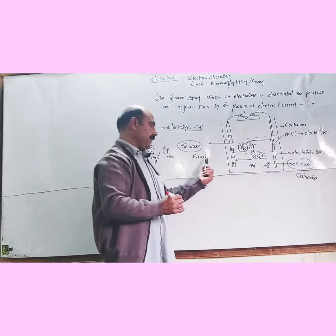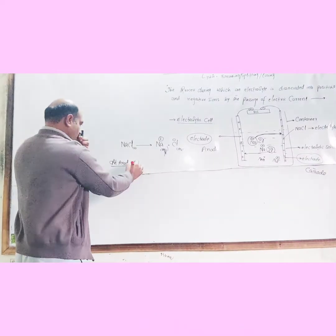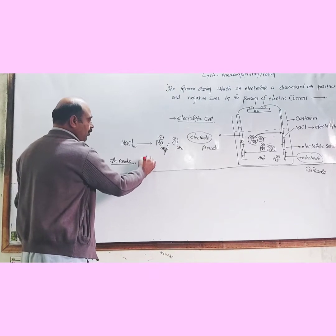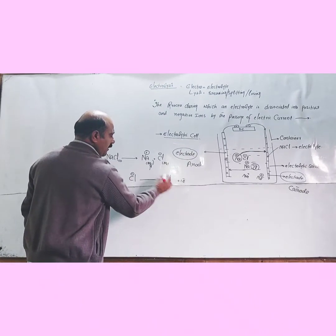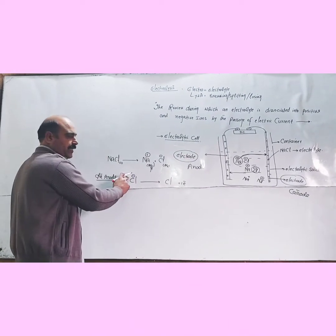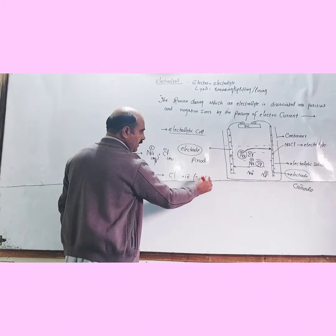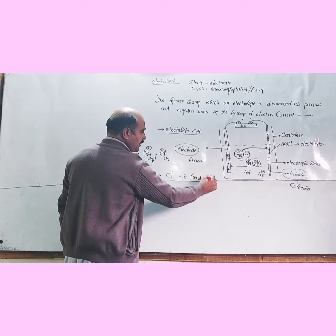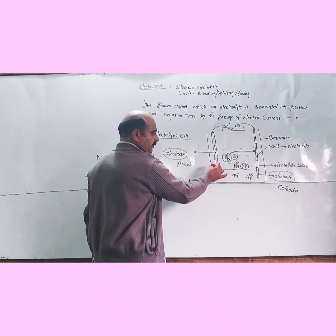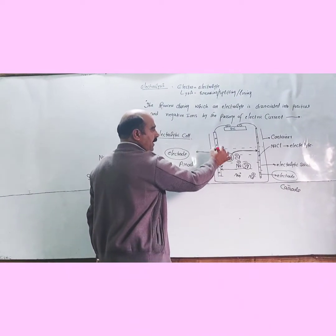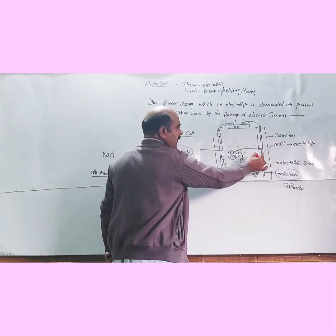The anode is positively charged. At the anode, electrons are released — this loss of electrons is called oxidation. The electrons released at the anode travel through the external circuit.